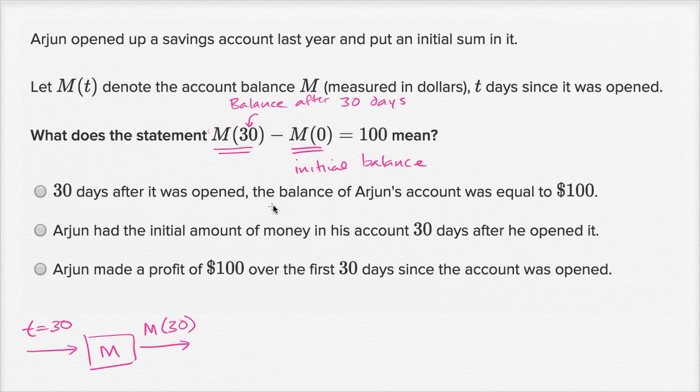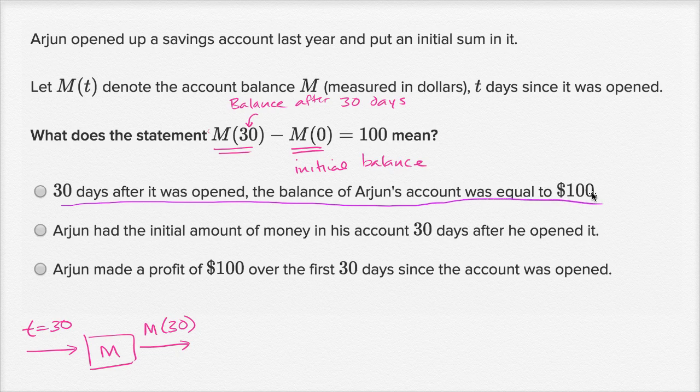30 days after it was opened, the balance of Arjun's account was equal to 100. No, that's not what that's saying. This would be equivalent to saying that M(30), the balance 30 days after it was opened, is equal to 100. That's not what they tell us here. They tell us that the difference between the balance after 30 days and the initial balance, that that is 100. So we can rule that one out.